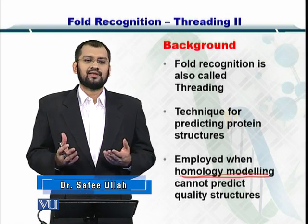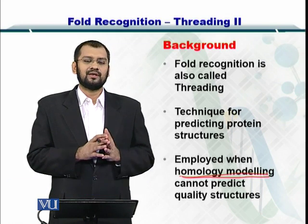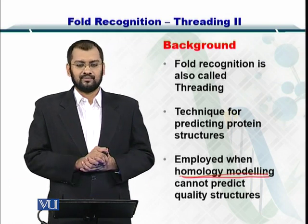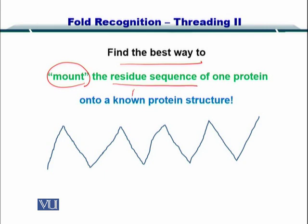In that case, we move towards the twilight zone where we have low identity and low alignment. Here, let's work on an example to find the best fold for a sequence. The best way to find that is to mount the residue sequence — that is the primary sequence of a protein — onto a known protein structure, which comes from a structure database or fold database.